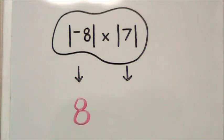The absolute value of negative 8 is 8 because negative 8 is 8 places to the left of 0 on the number line. The absolute value of 7 is 7 because 7 is 7 places to the right of 0 on the number line.